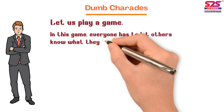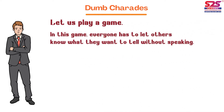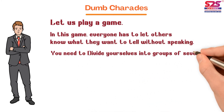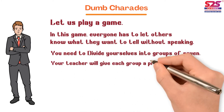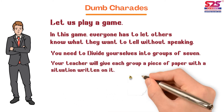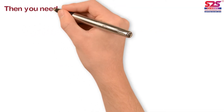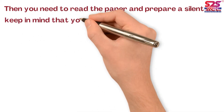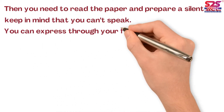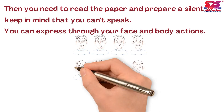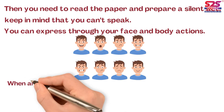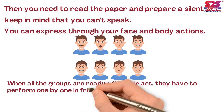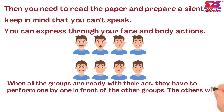In this game, everyone has to let others know what they want to tell without speaking. You need to divide yourself into groups of seven. The teacher will give each group a piece of paper with a situation written on it. You need to read the paper and prepare a silent act. Keep in mind that you cannot speak — you can express through your face and body actions. When all the groups are ready with their act, they have to perform one by one in front of the other groups.